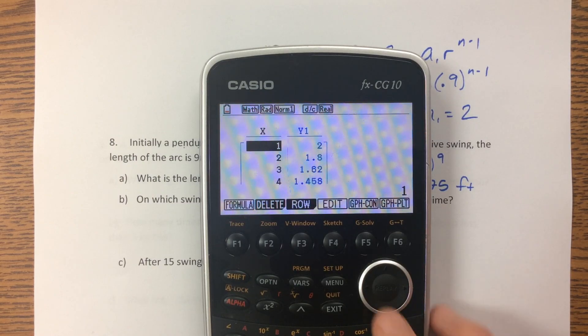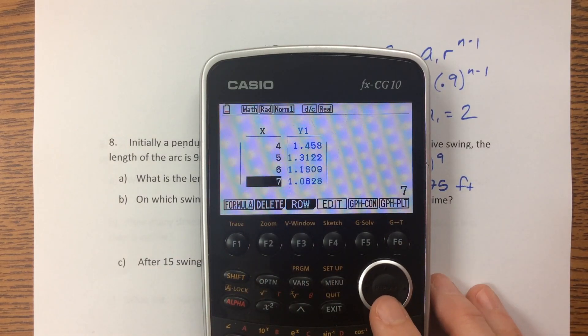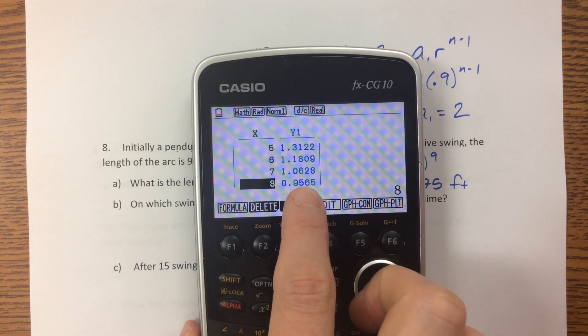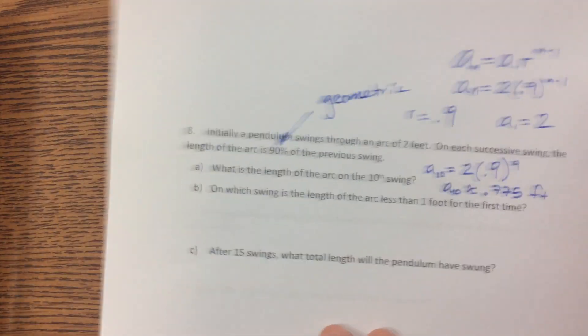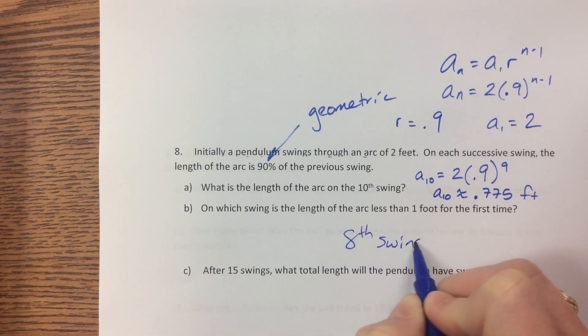So now when I go to the table, I can scroll through here and see on swing 1, it was 20. On swing 2, it was 1.8. And I can generate all these terms. And the first one that's less than 1 foot is swing 8. So on which swing? The eighth swing.